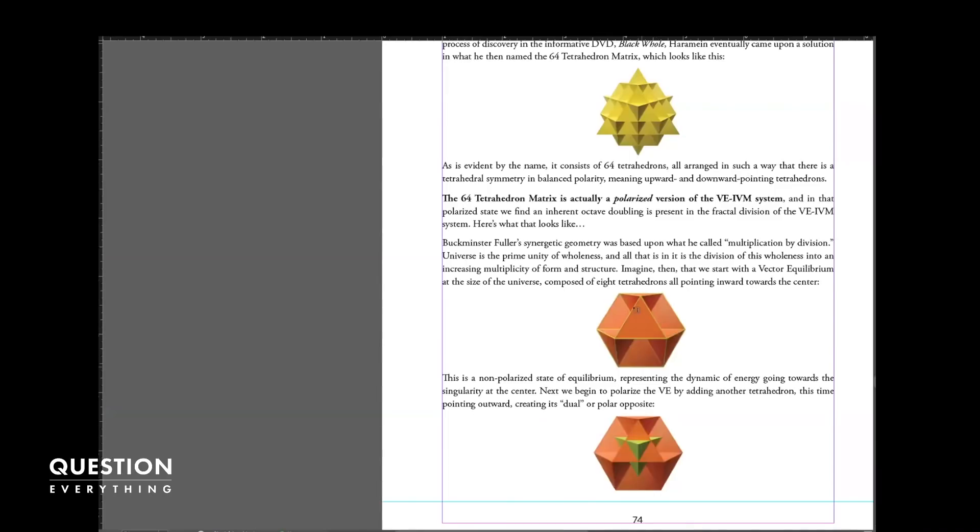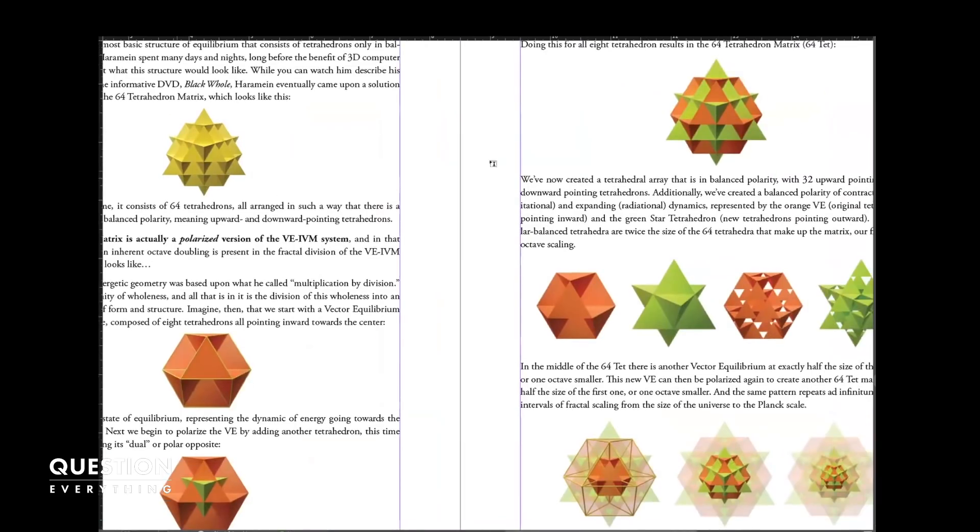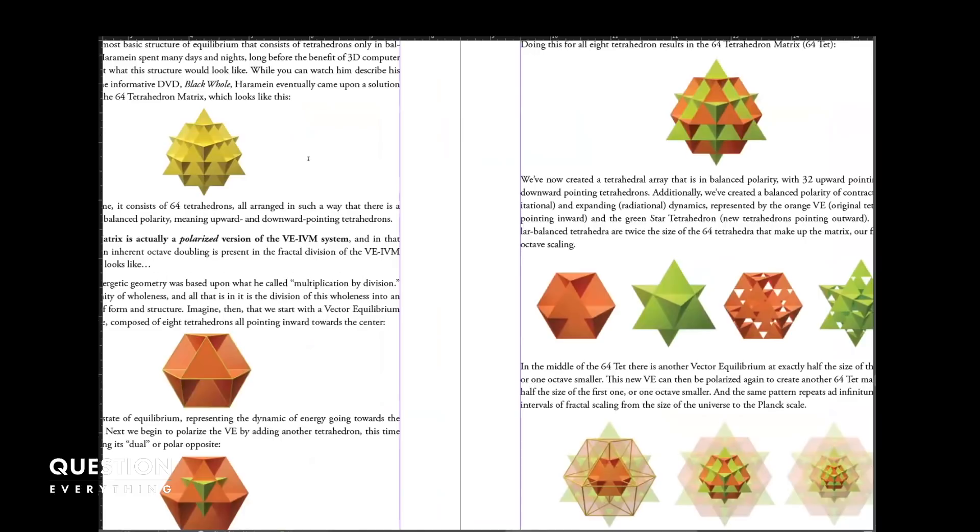When you take each of these tetrahedron, the eight that are here, and you polarize each of them, so that you have now a tetrahedron that's pointing out a radiative force pointing outward to balance the gravitational force pointing inward, and you polarize each one of those, you actually get the 64 matrix. In essence, the 64 is the first instance of a polarized isotropic vector matrix.